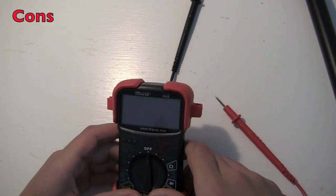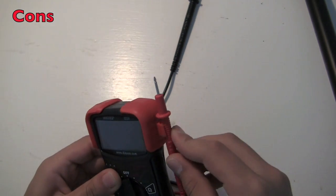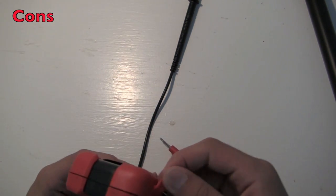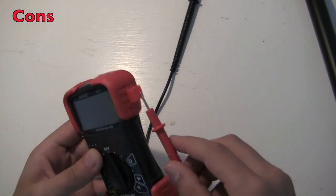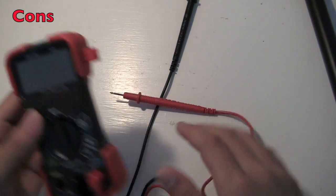Alright, now I'm going to talk about some of the disadvantages. One of the disadvantages is that it has these clips here to hold the probes, but they have this weak rubber, so if you put the probes in, they kind of hang there and they easily fall out.